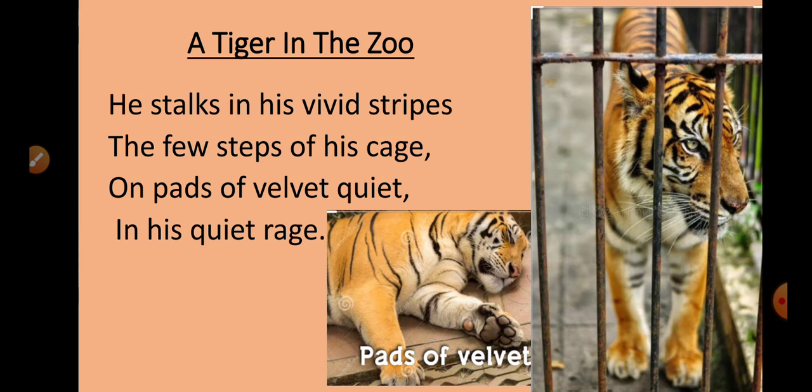The poet describes the tiger which is in a cage in the zoo and says that 'he stalks in his vivid stripes the few steps of his cage.' Stalks means to walk secretly, to follow someone secretly. Here the tiger stalks the few steps of his cage — he is following his own steps, the little space there is in the cage to walk. Stalking here means he is walking slowly.